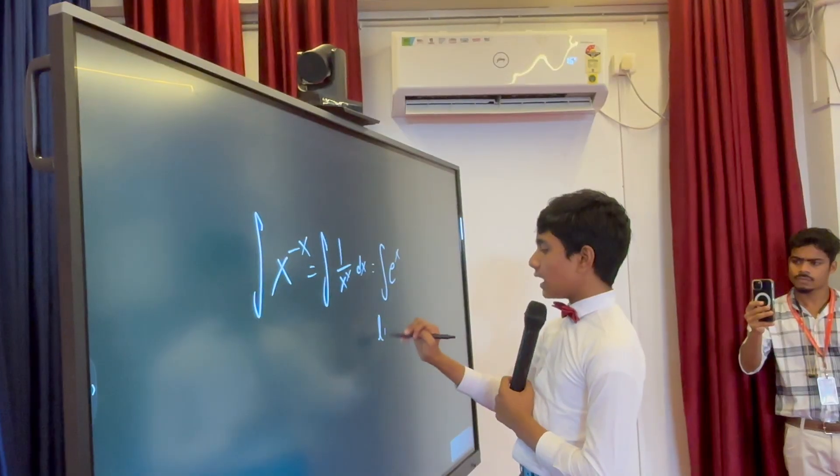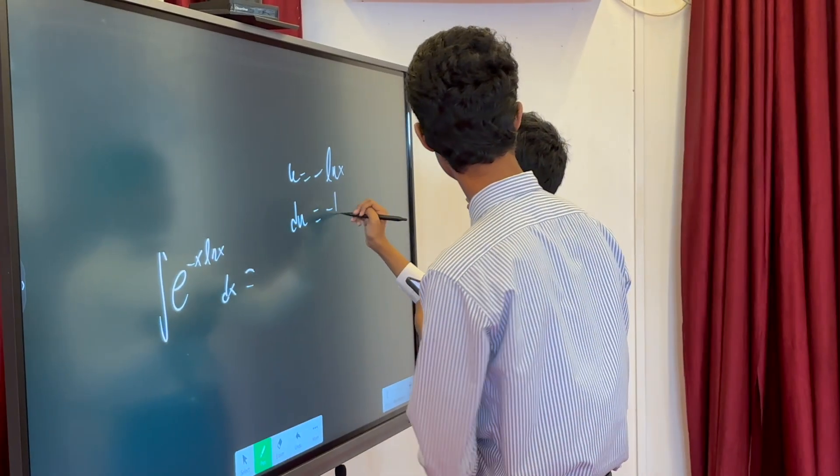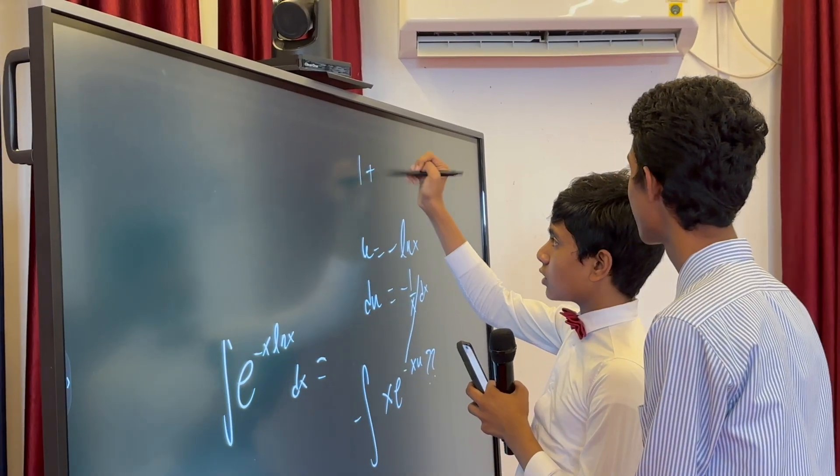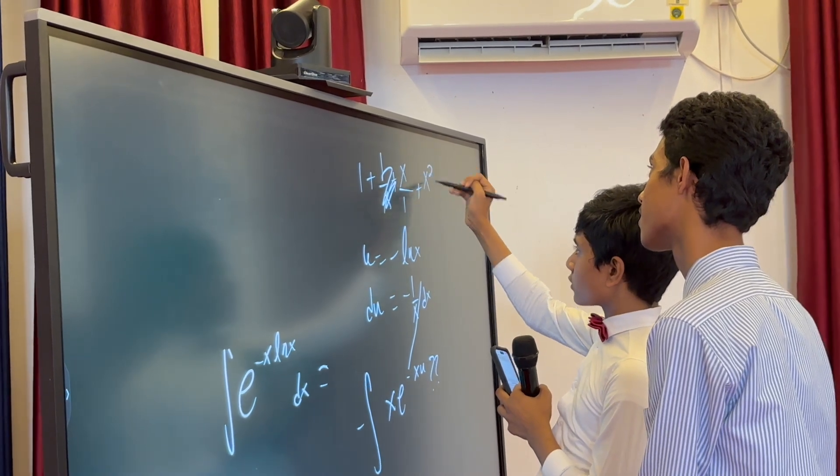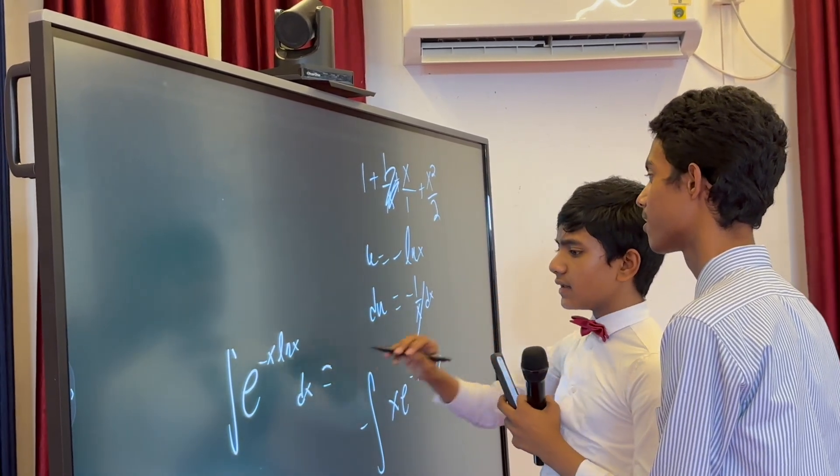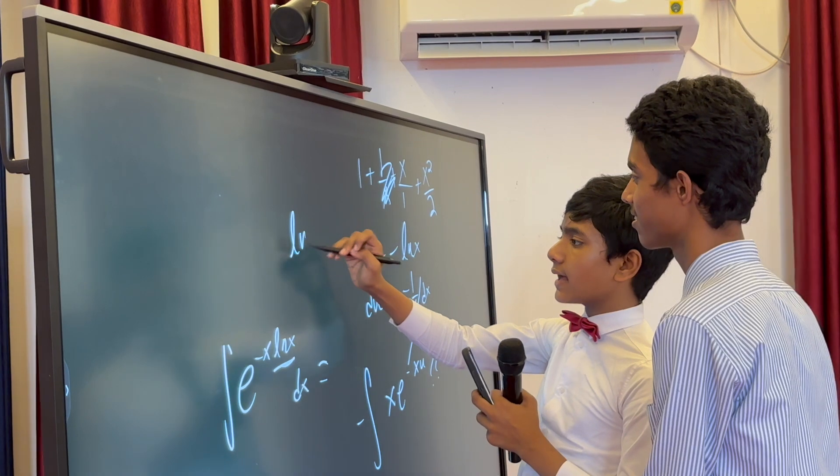So if x equals minus x, it's one, because x to the minus x... But that would be less than something. It's ln x squared.